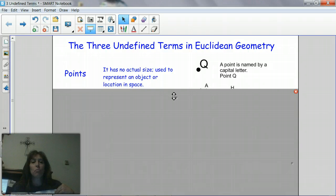The definition of a point is that it has no actual size, it's used to represent an object or location in space. Remember today in class we talked about the fact that some people had little bitty tiny points and then other people had great big huge balls but it was still technically a point which is a location in space.